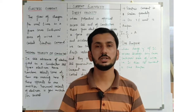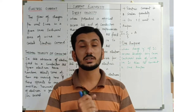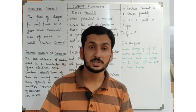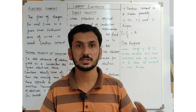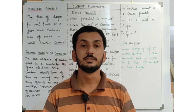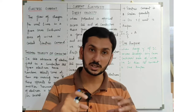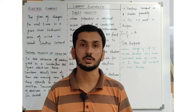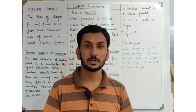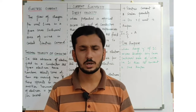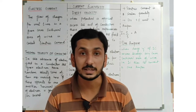Now, to understand electric current, we need to know what conductors and insulators are. Conductors are elements through which heat and electricity can easily pass because they have free electrons that are detached from their parent atoms and move in random directions. Insulators, on the other hand, do not have free electrons and are not good conductors of heat and electricity.